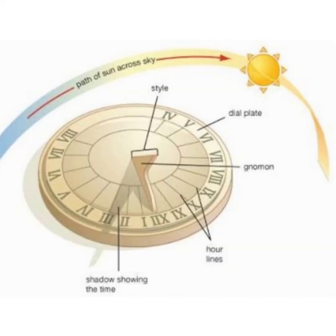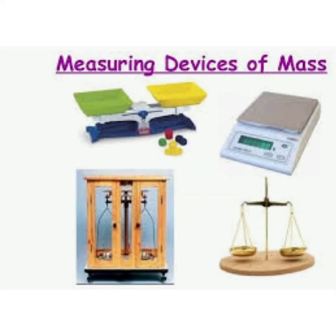Who invented time? The measurement of time began with the invention of sundials in ancient Egypt. What is the SI unit of time? Second. How can we measure mass? We can measure mass using a balance. What is the lowest unit of mass? Milligram.